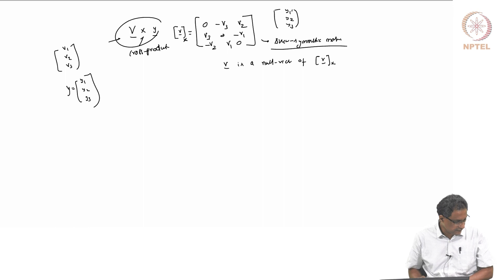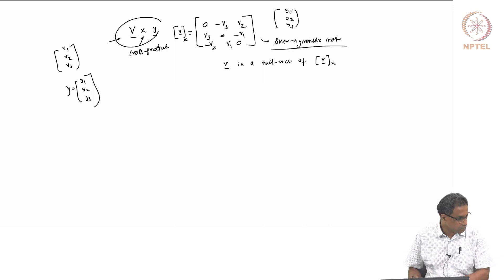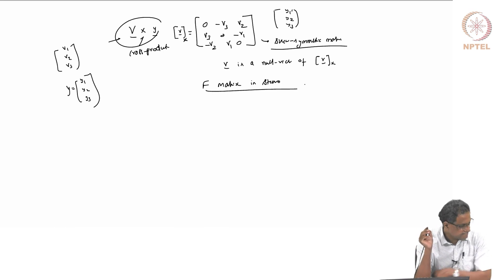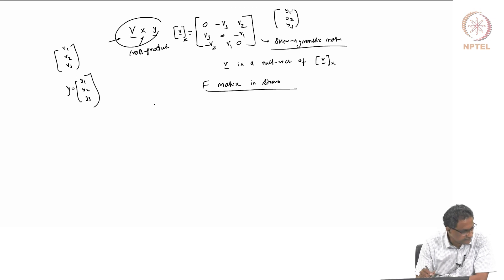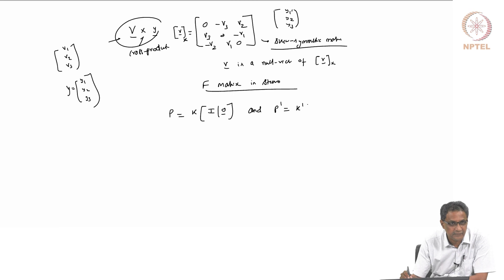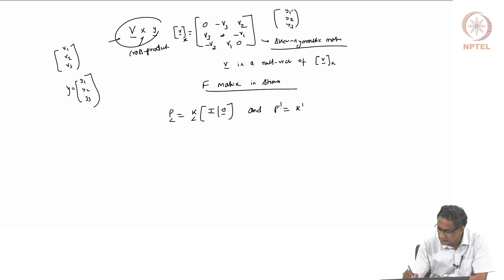Let me come back to the fundamental matrix in stereo. The left camera projection matrix is P_L = K_L [I | 0], and the right camera projection matrix is P_R = K_R [R | t]. Now, as opposed to the homography, which tries to relate two image points directly, the fundamental matrix establishes a relation between a point in one image and its epipolar line in the other image.